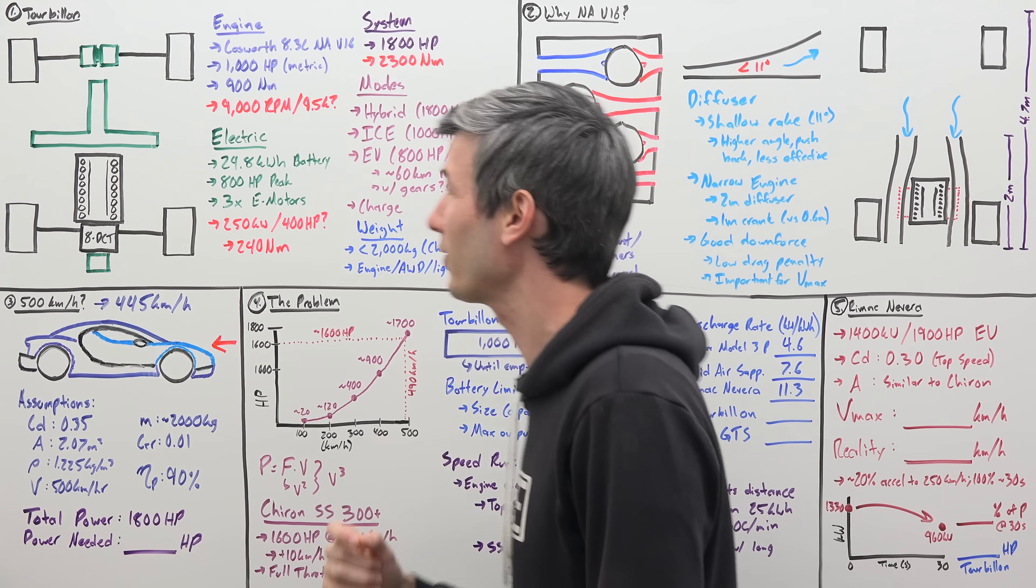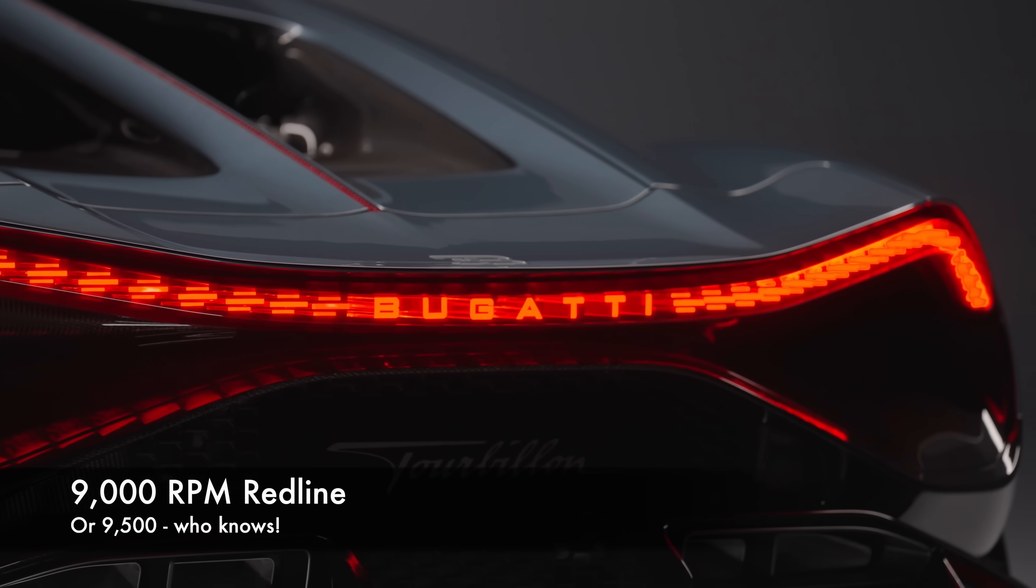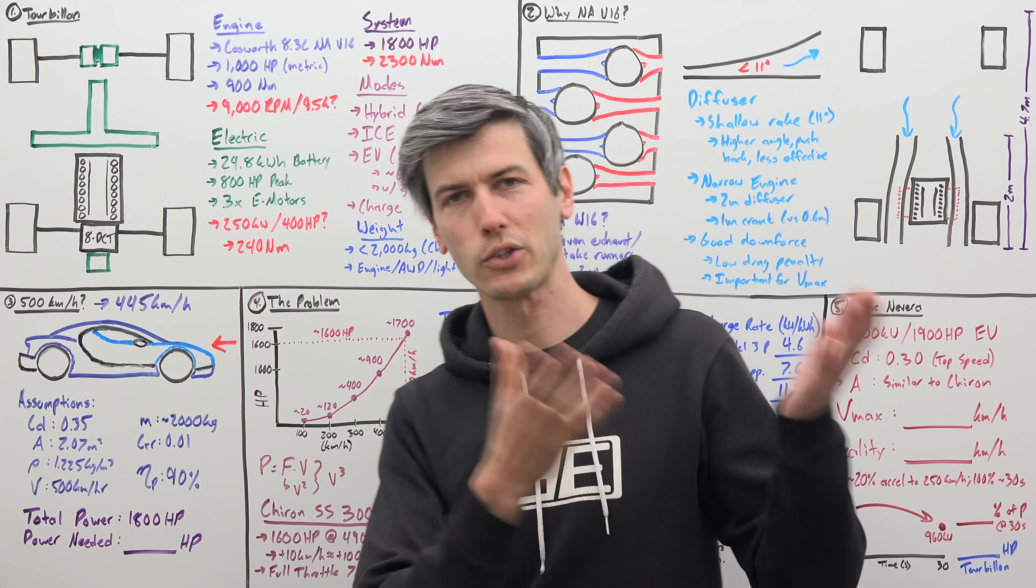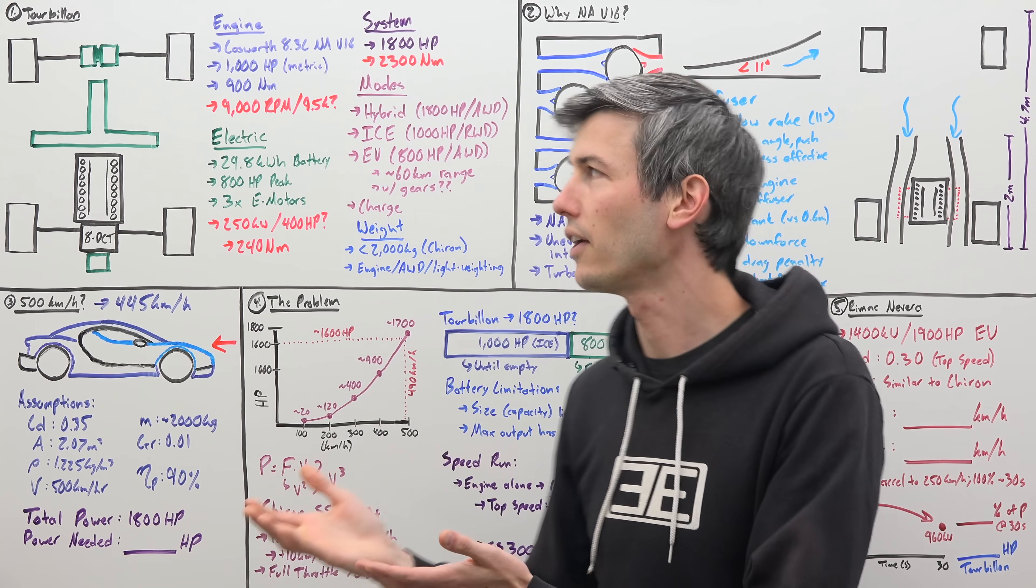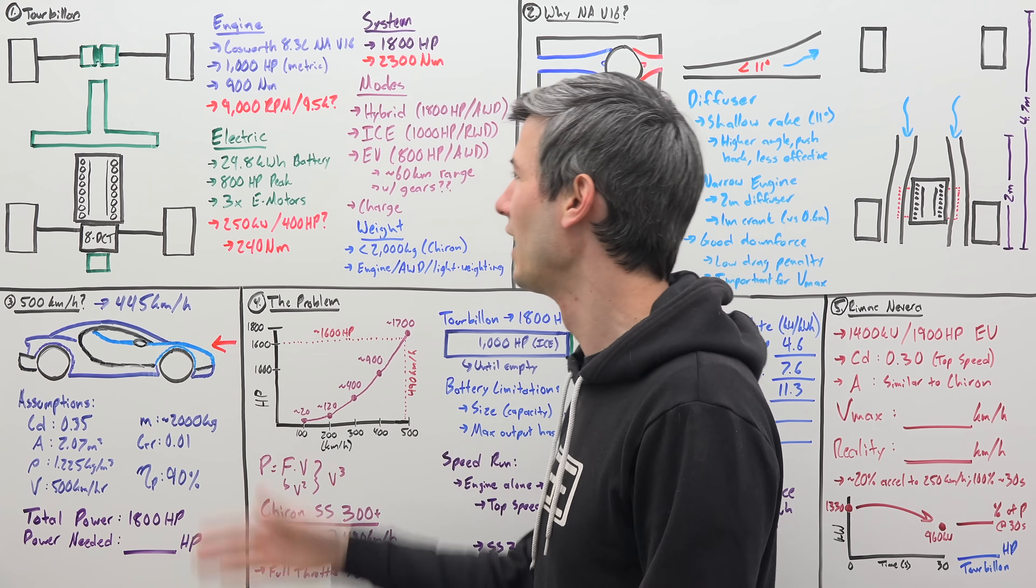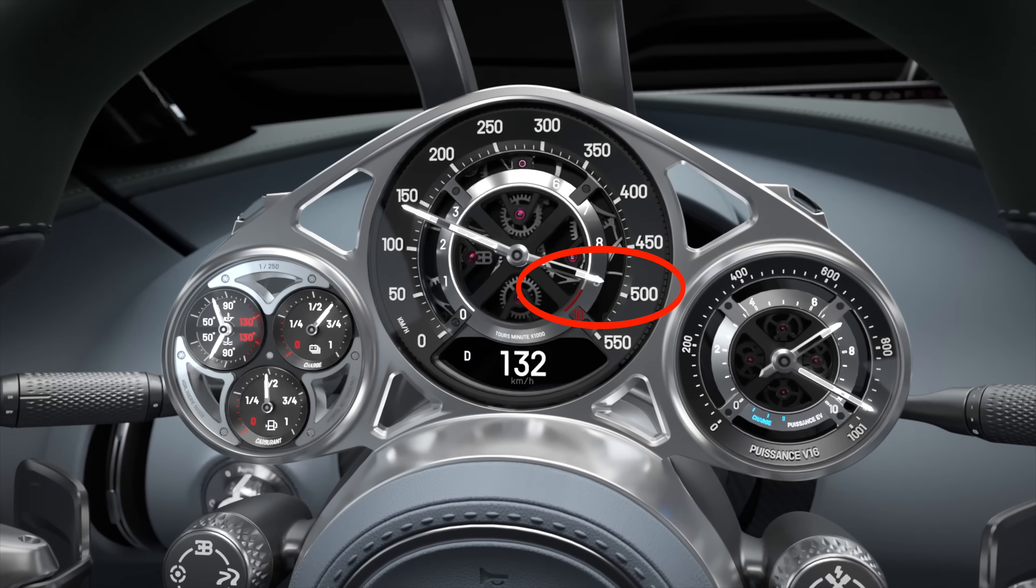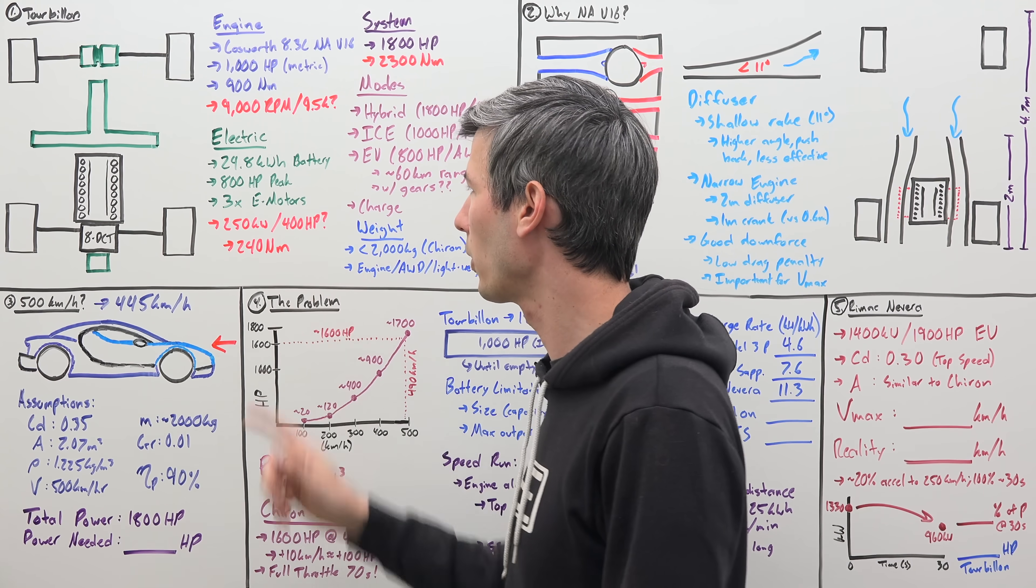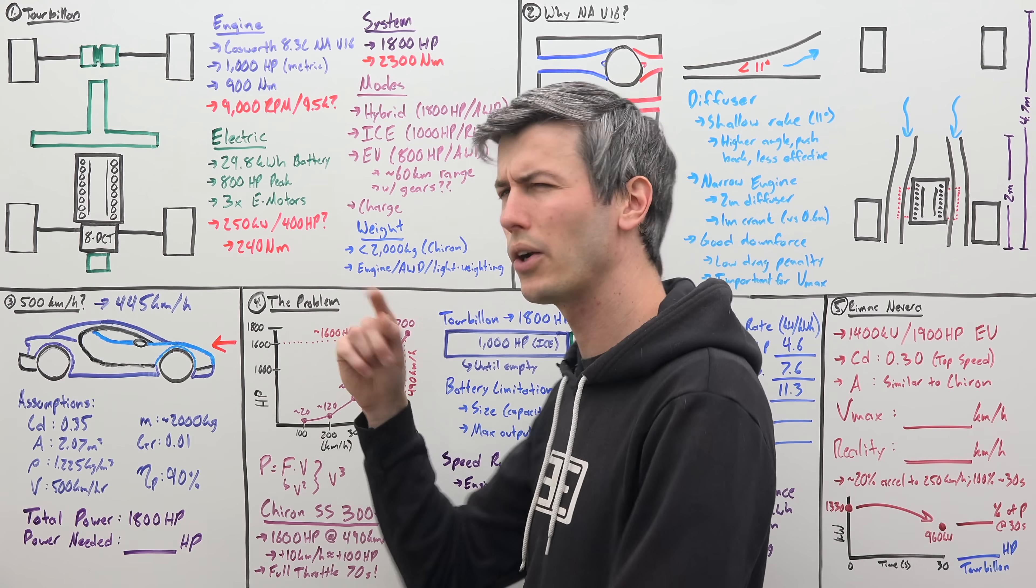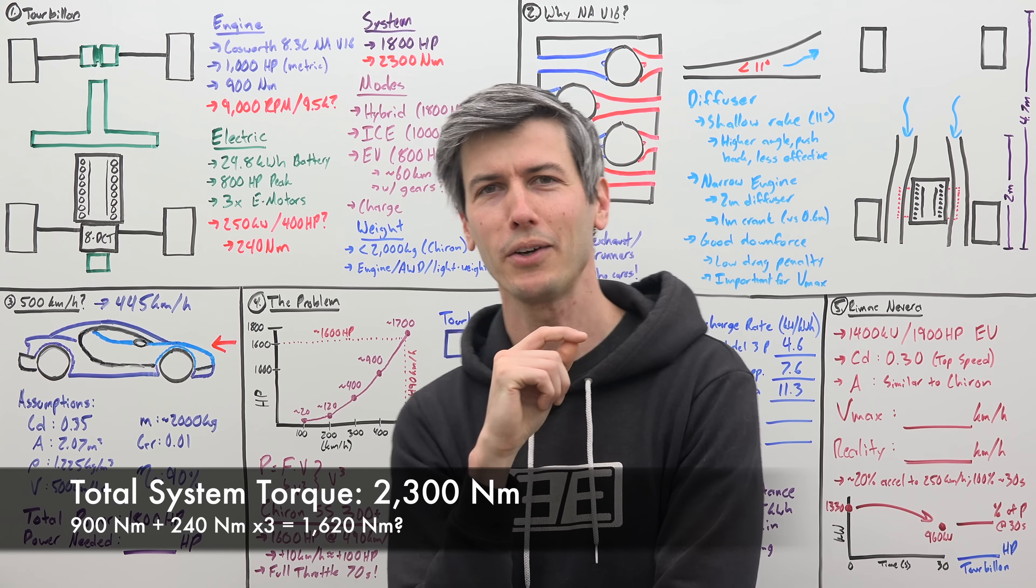So the V16 engine producing 1,000 horsepower, 900 newton meters of torque, and revving to either 9,000 RPM or 9,500 RPM. Everything I have written in red, the spec sheet says one thing, Matei Rimac has said another thing. I don't know which is correct, so I've reached out for clarification. And then also, these electric motors can produce about 400 horsepower each, and 240 newton meters of torque.